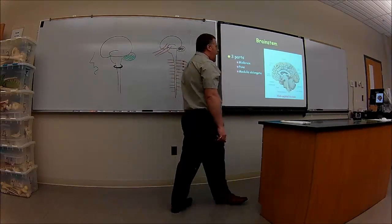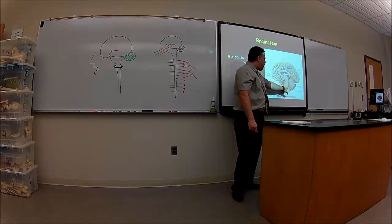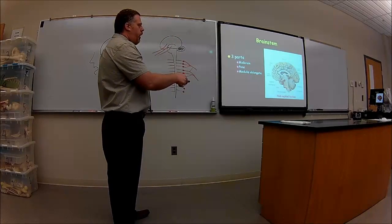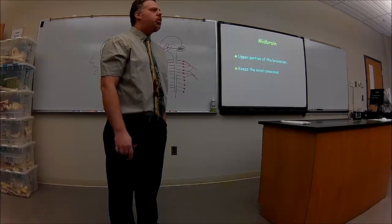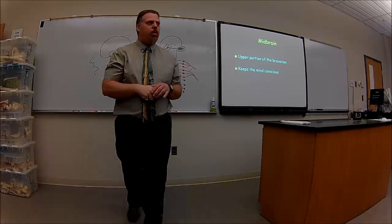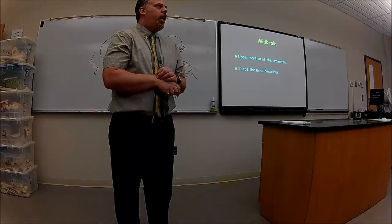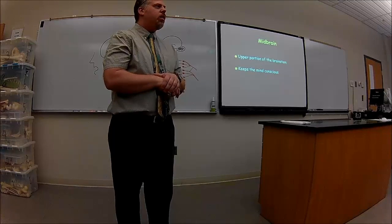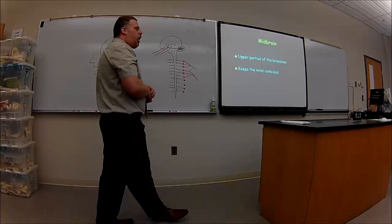The brain stem — this is a sagittal cut of the brain. There are three parts to it: the midbrain, the pons, and the medulla oblongata. The midbrain is the upper portion of the brain stem — it's the middle of the brain itself, hence the name midbrain. It keeps the mind conscious. If it gets affected, the person goes unconscious. What do you call someone sleeping for two years? A coma. So the midbrain is involved with coma.